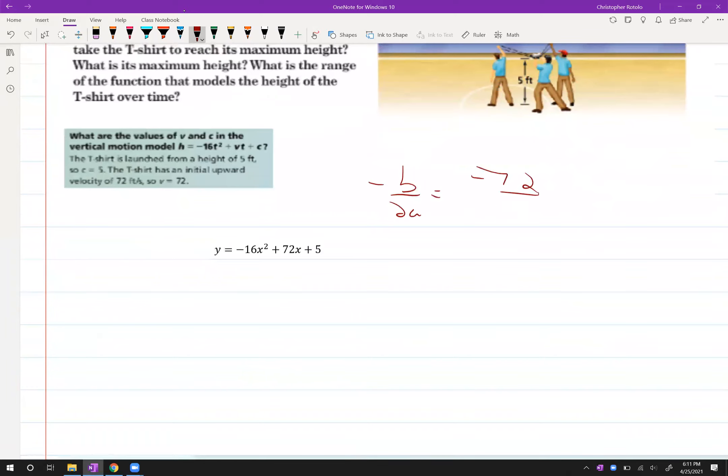Negative b over 2a. Negative 72, 2 times negative 16, negative 72 divided by negative 32. So let's see what we got here. And they're both negative. So 2.25 seconds. What's range of function? How long does it take? So here's part of it. Now we're going to take that negative 16, 2.25, and we're going to square it plus 72 times 2.25 plus 5.